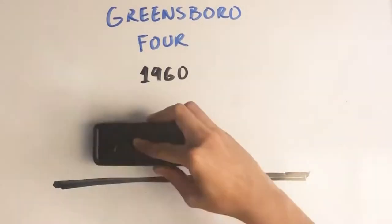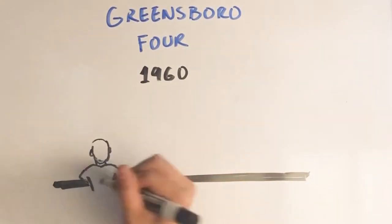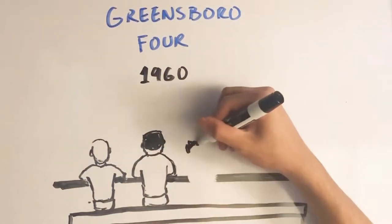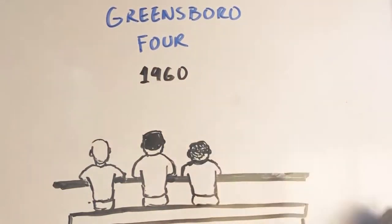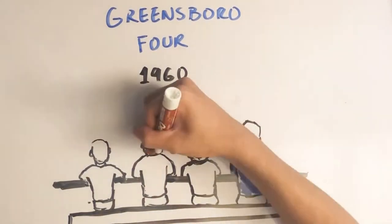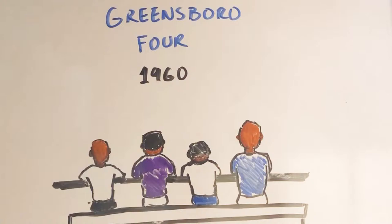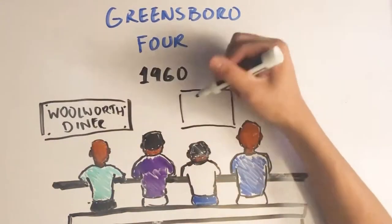In Greensboro, North Carolina, four college students pioneered a new method of non-violent protest. A Woolworth diner did not serve black people, so the four students utilized the sit-in. They came in every day for weeks, sat at the counter, and refused to move. The sit-in movement quickly spread and was used with freedom marches, boycotts, and other forms of non-violent protest.